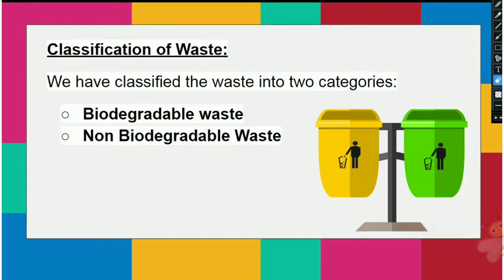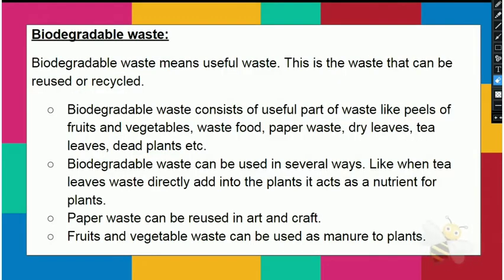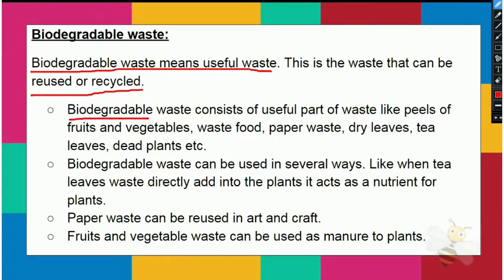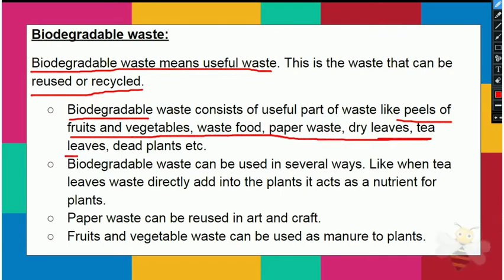Classification of waste: Waste is classified into two types — biodegradable and non-biodegradable. Biodegradable means useful waste that can be recycled or reused. Biodegradable waste consists of useful parts like peels of fruits and vegetables, food waste, paper waste, dry leaves, tea leaves, and dead plants.